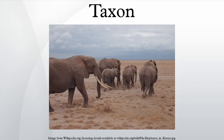In biology, a taxon is a group of one or more populations of an organism or organisms seen by taxonomists to form a unit. Although neither is required, a taxon is usually known by a particular name and given a particular ranking, especially if and when it is accepted or becomes established. It is not uncommon, however, for taxonomists to remain at odds over what belongs to a taxon and the criteria used for inclusion. If a taxon is given a formal scientific name, its use is then governed by one of the nomenclature codes specifying which scientific name is correct for a particular grouping.